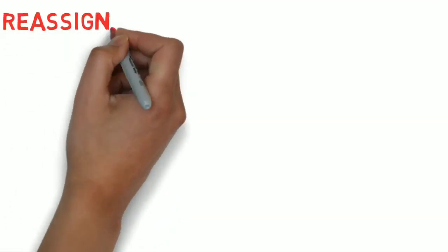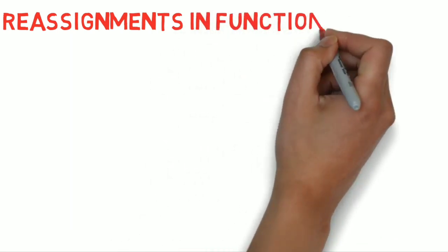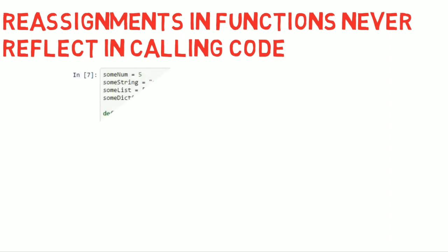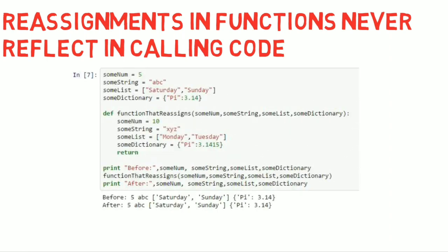Now all of that was a little bit mind-bending, so let's recap. Reassignments in functions never reflect in the calling code. Whether you try to reassign a number, string, list, or dictionary inside a function, none of it reflects when you print them in the calling code. The values of all variables before and after the function is called remain the same. This is because when you reassign inside a function, you take the duplicate tag created by the function and put it on a new object — the original variable is still assigned to the same value.